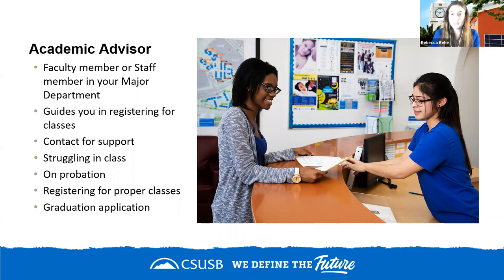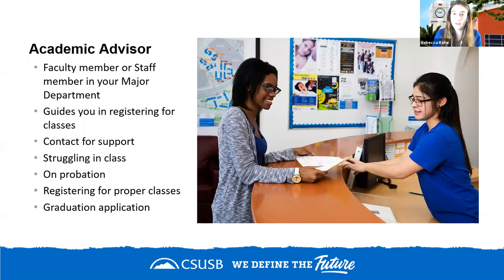Any student who graduates must complete certain paperwork so the university can confirm all degree requirements have been met before processing the diploma and final transcripts. At CSUSB, for most undergrad programs, students meet with a professional staff member for the first two years, who walks them through general requirements for their major and the institution.